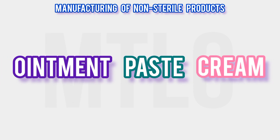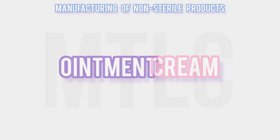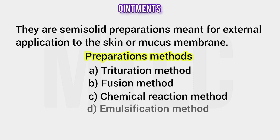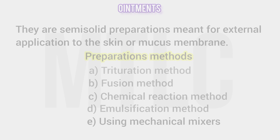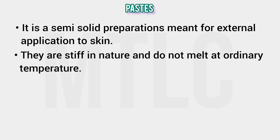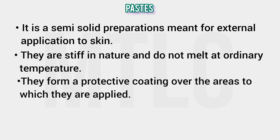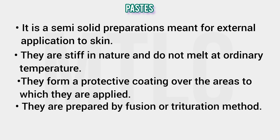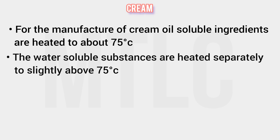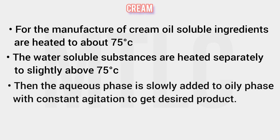For ointment, paste, and cream manufacture — semi-solid preparations — methods include: trituration method, fusion method, chemical reaction method, and emulsification method. Paste is a semi-solid preparation for external application; it is stiff at ordinary temperature and melts on application, providing a protective coating, prepared by fusion or trituration method. For cream: oil-soluble ingredients are heated to 75°C, water-soluble ingredients are also heated to 75°C, then the aqueous phase is slowly added to the oil phase and agitated.